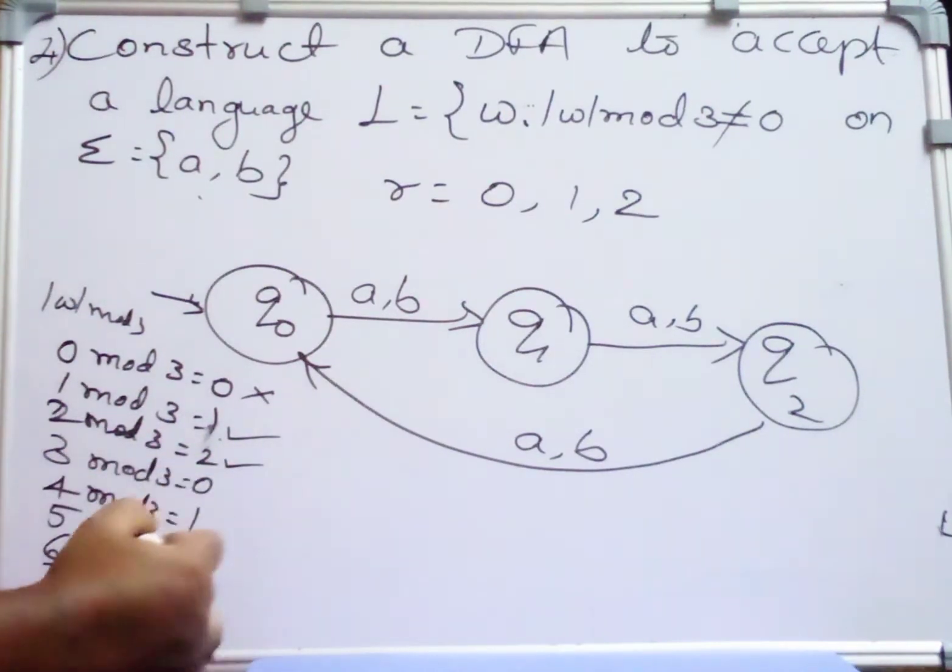Similarly 2 mod 3 should be accepted. When it comes for 3 mod 3, it is equal to 0, this should be rejected. 4 mod 3 accepted, 5 mod 3 accepted. 6 mod 3, which are multiples of 3, should be rejected. The remaining strings should be accepted.